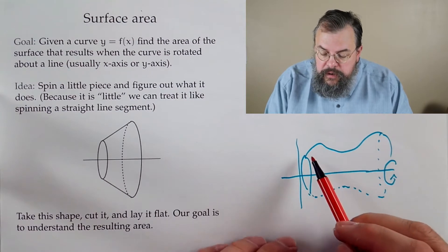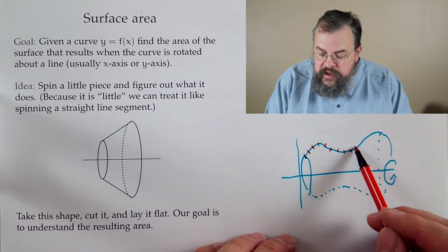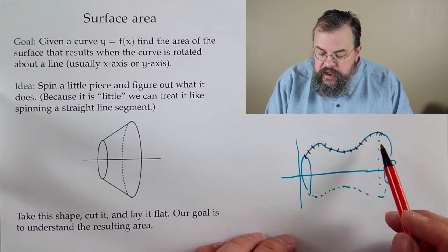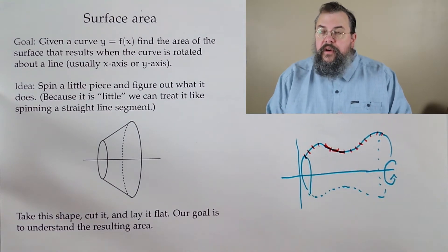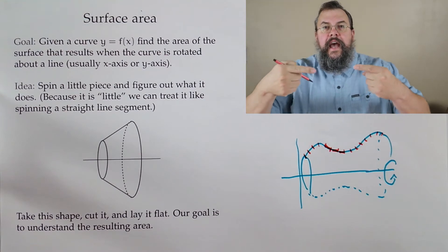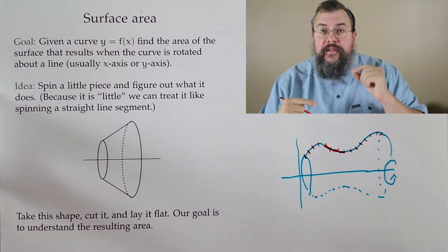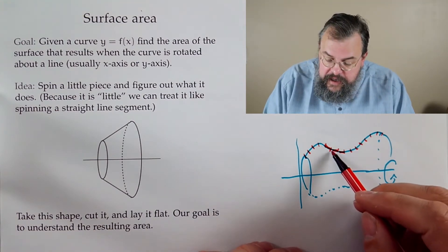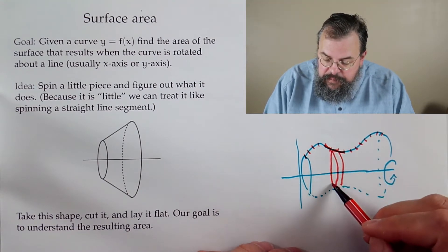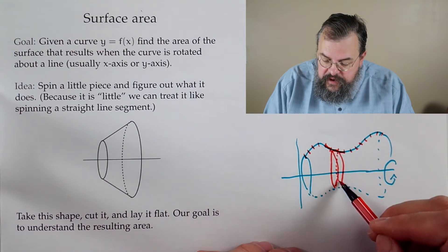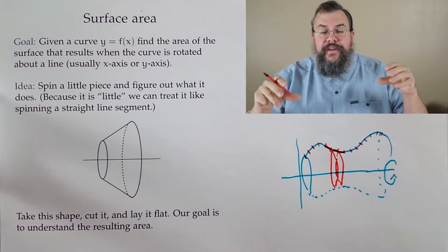Instead of spinning the whole curve, we break the curve into little tiny parts. The nice thing is that each small part looks like a straight line. So if we understand what happens when we spin a straight line — if we can find that surface area — then we can find the surface area of each tiny piece and add all the pieces together.